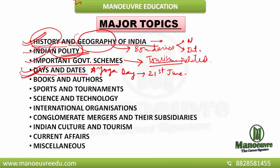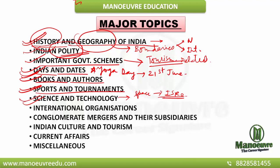Next comes books and authors — all the important books and authors, the recent ones and the more important ones. Next comes sports and tournaments; you need to be aware of all the sports and tournaments that have happened recently and all the winners. In science and technology, you need to be aware of all the recent space-related developments, especially the works of ISRO, which play a major part of your GK section.